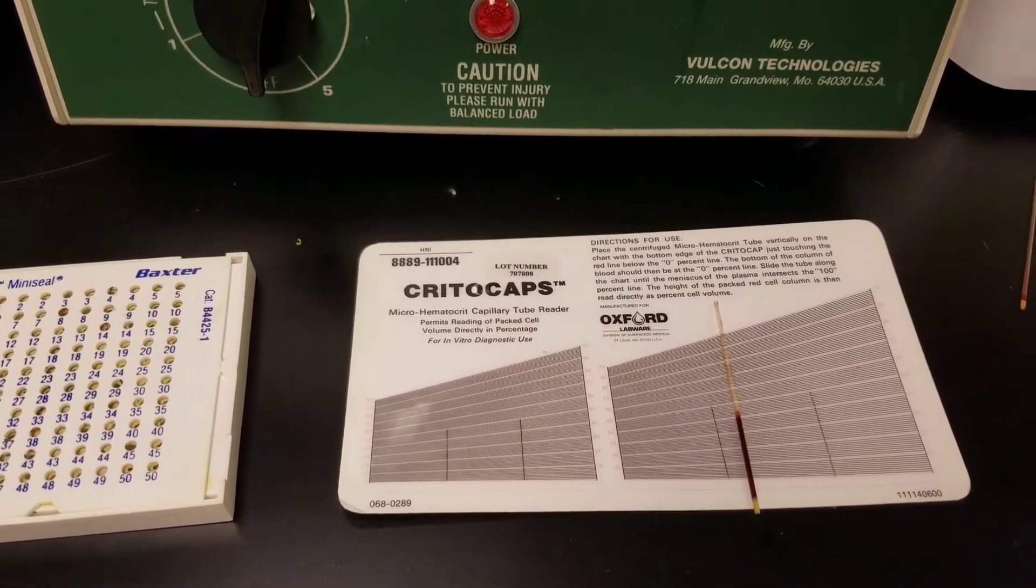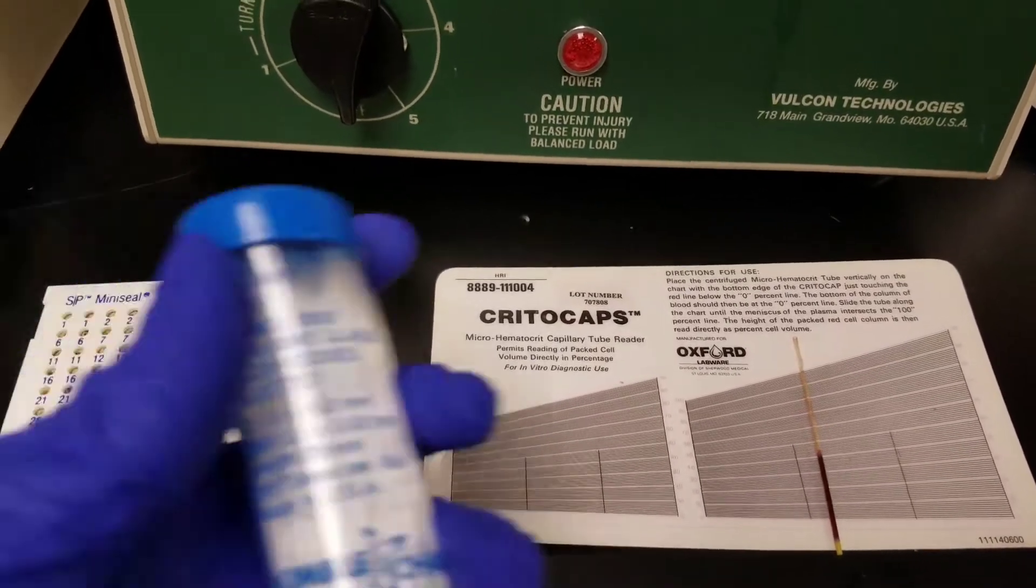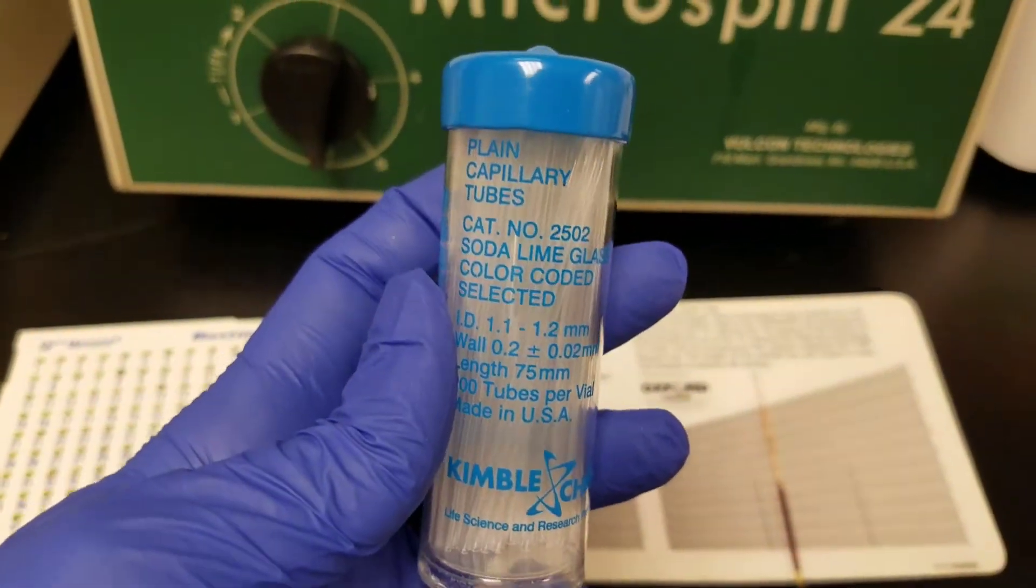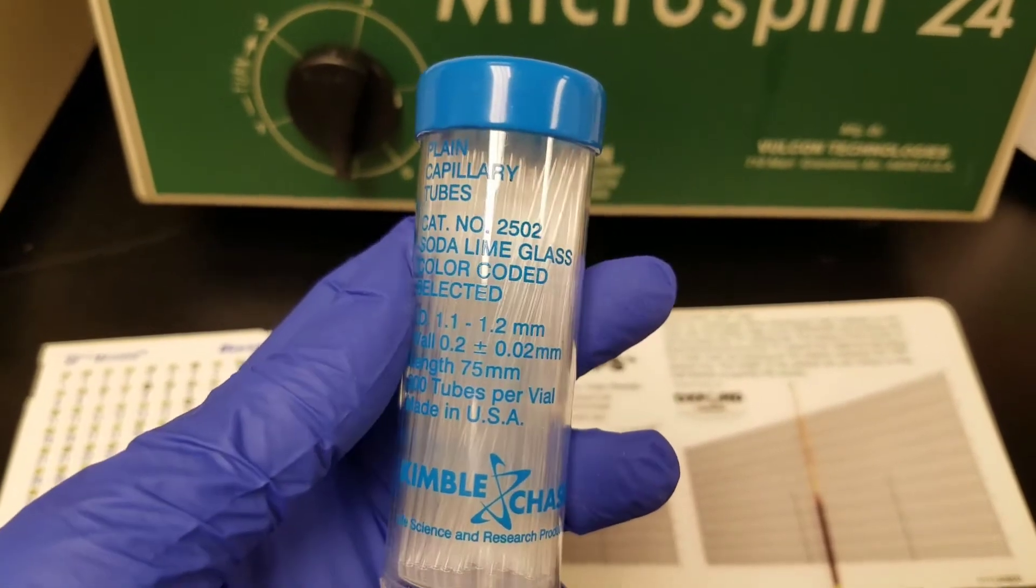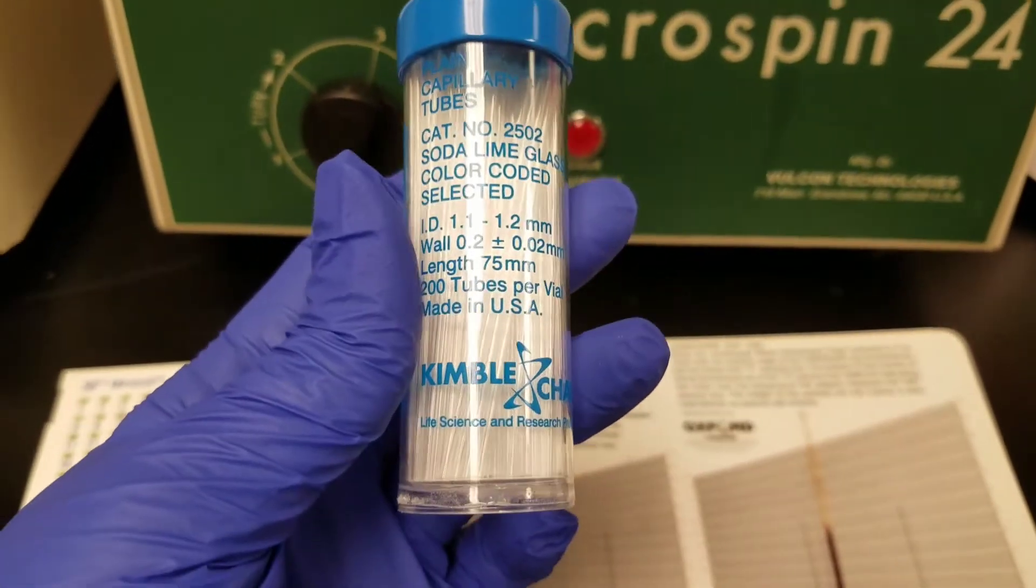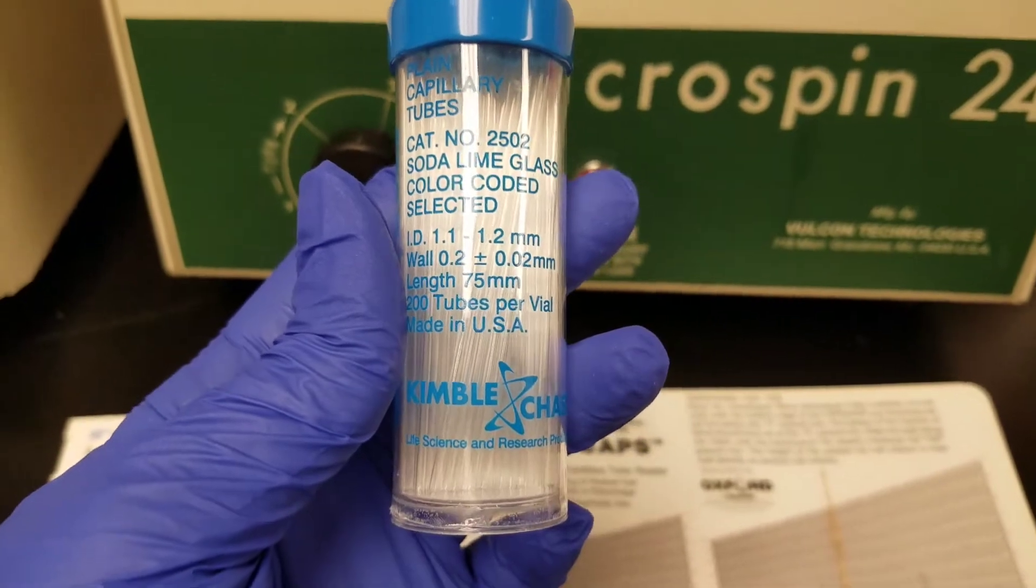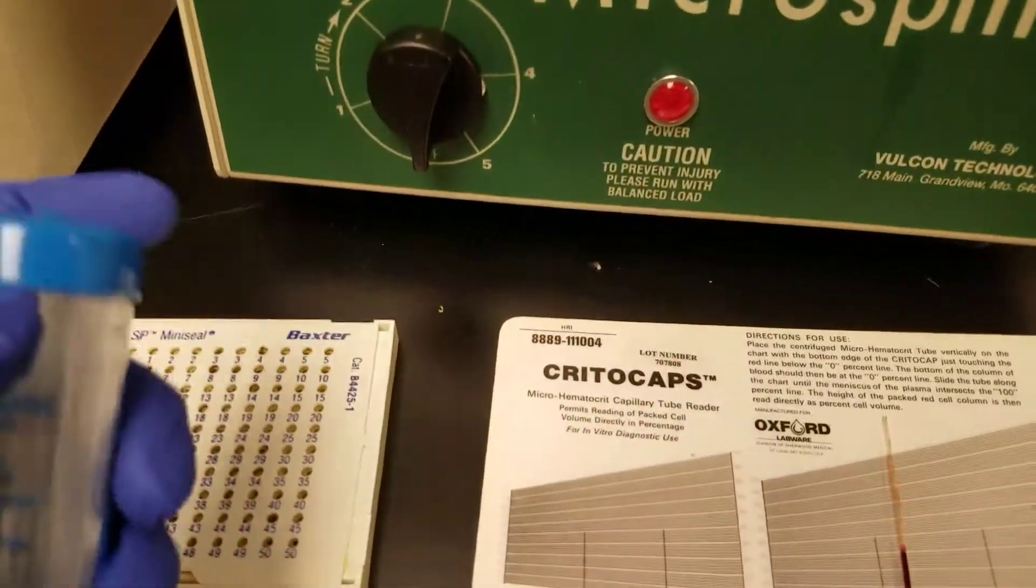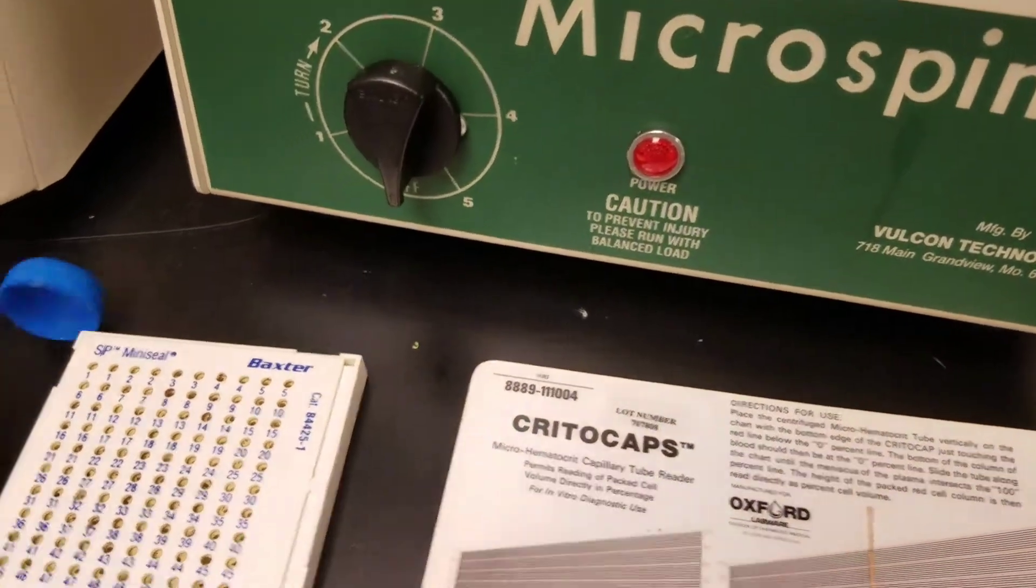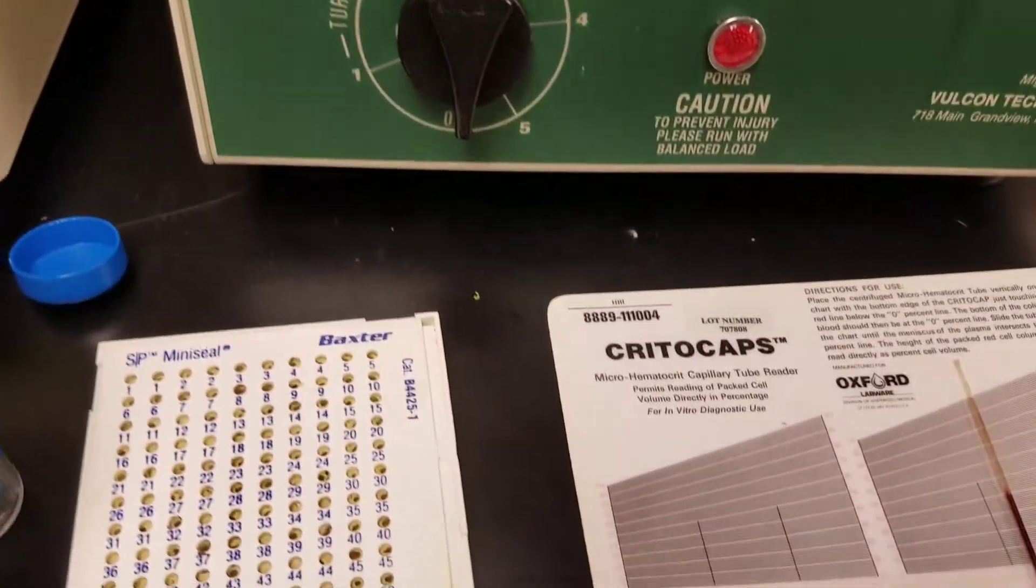What you will need are some glass tubes. These are just plain capillary tubes - soda lime glass, color code selected. These are 75mm in length. Now these are really pretty thin so they can be broken. Like I said, they are glass.